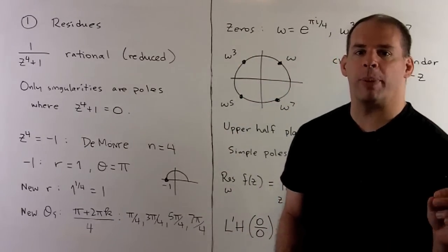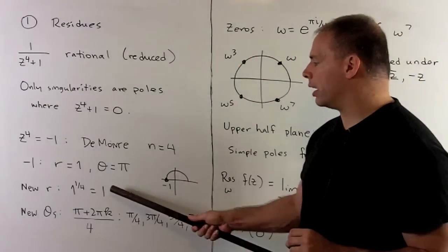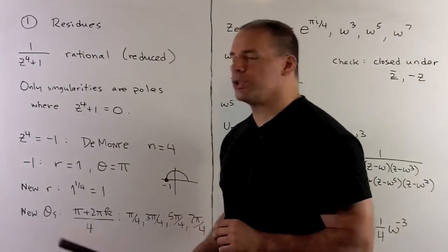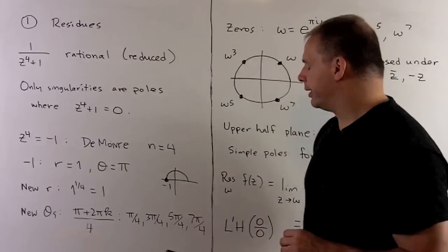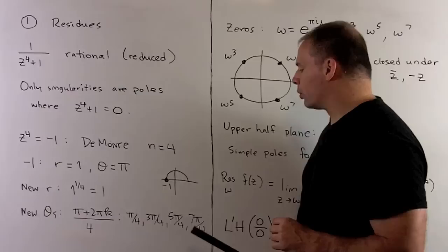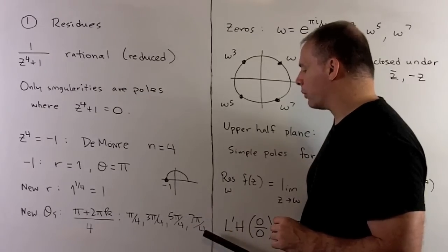The new modulus, take the old modulus to the 1/4th power. So, we still keep our 1. For the new angles, take your old angle, add all multiples of 2 pi, and then divide by your n. So, we get pi/4, 3 pi/4, 5 pi/4, 7 pi/4.